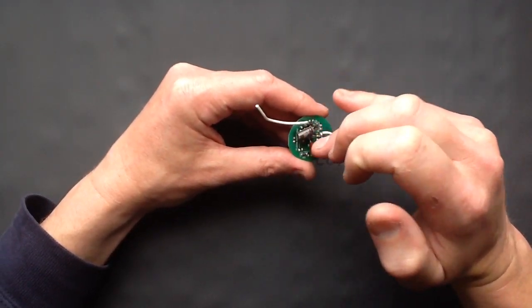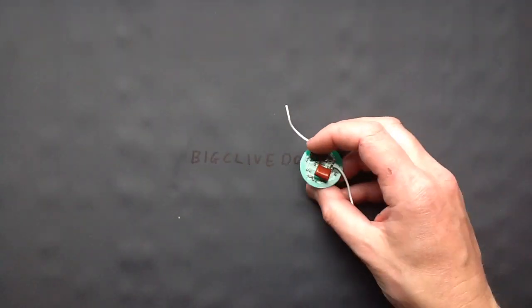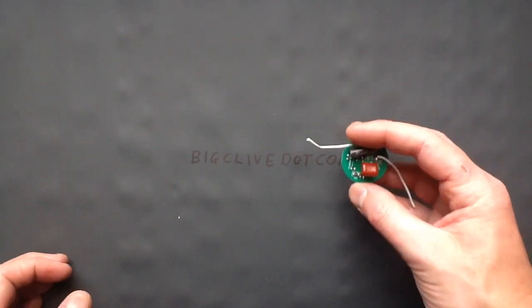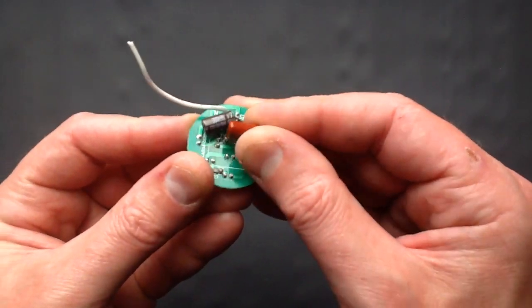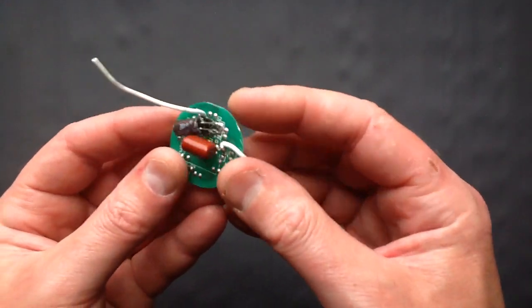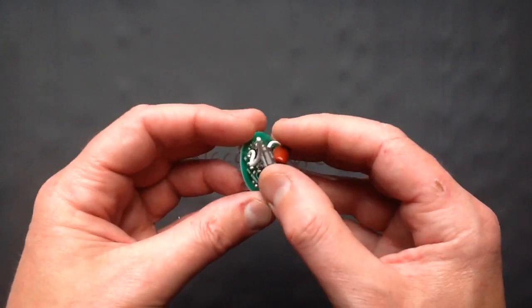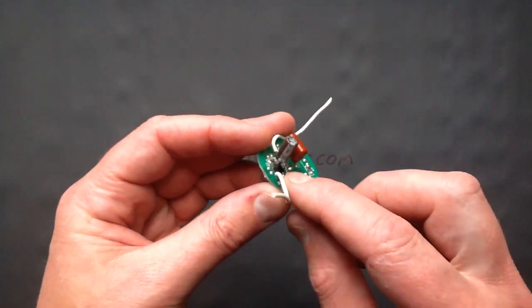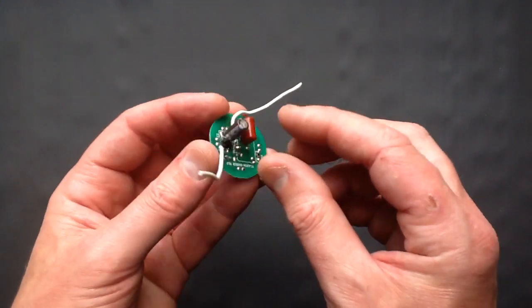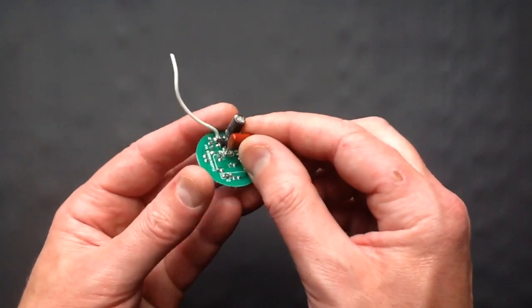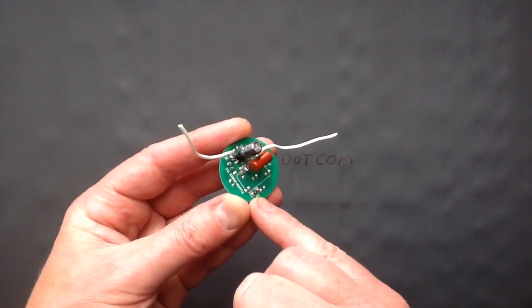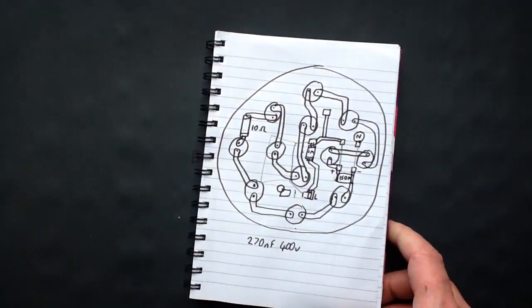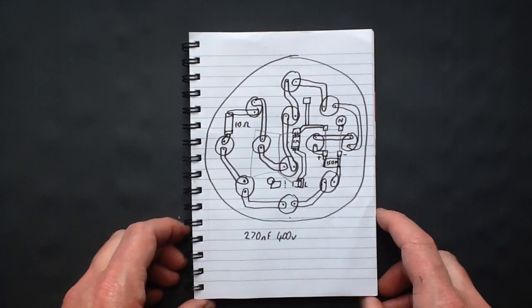So first of all, I'm going to give you a close-up of the back of this, showing the little bridge rectifier tucked away under here, the smoothing capacitor, the current limiting capacitor, and then a little inline resistor here. So I've reverse engineered this circuit board, and this is what it looks like.